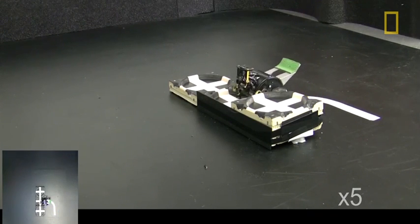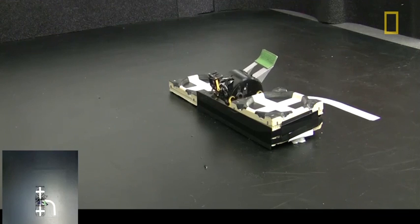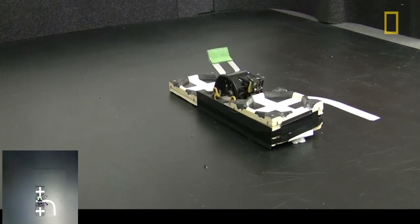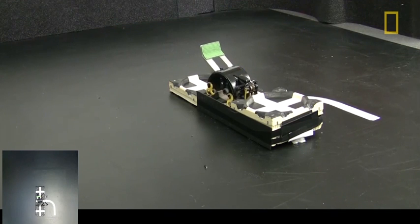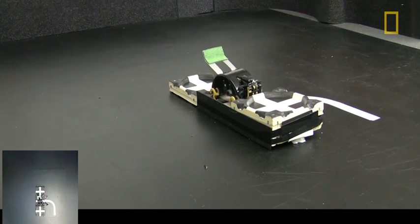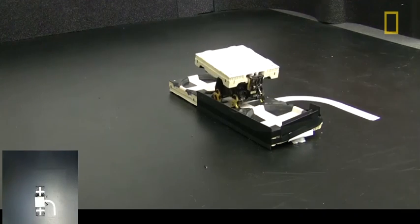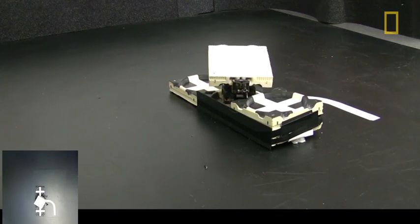The long-term vision of a system like this is to do automated construction in settings where humans can't easily do it. So for instance, if we want to send astronauts to Mars, it's very hard, very dangerous and expensive to send astronauts to build there. It would be ideal if we could send a team of robots on ahead to build them a habitat, so that would be waiting for them when they show up.